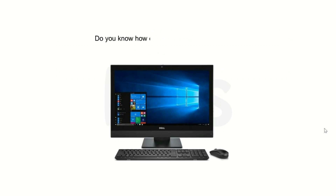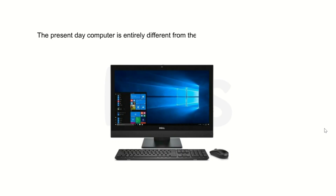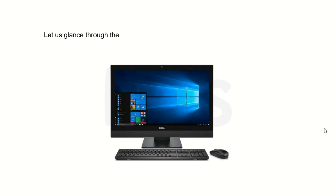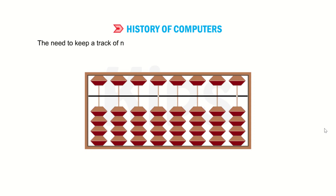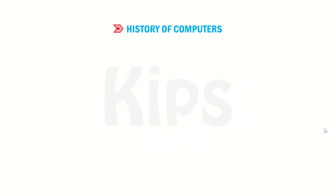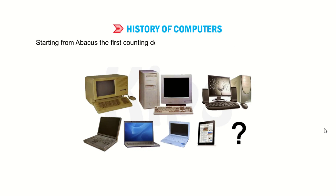Do you know how the computer came into existence? The present-day computer is entirely different from the earlier devices that were invented for doing calculations. Let us glance through the major milestones in the journey leading to the evolution of present-day computers. Let us first learn about the history of computers. The need to keep track of numbers led to the invention of different calculating devices. Starting from the Abacus, the first counting device, many devices were invented, leading to the development of computers.